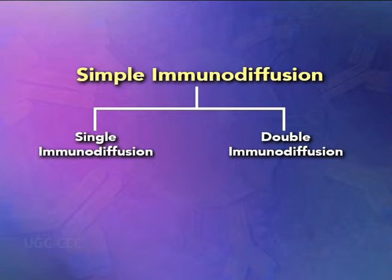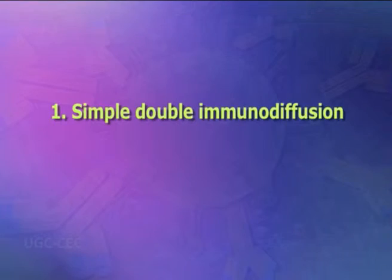The radial immunodiffusion method is used to determine alpha-fetoprotein occurring in certain liver tumors. In double immunodiffusion, both the antigens and the antibodies diffuse in gel. Under this heading, simple double immunodiffusion, the Ouchterlony procedure and immunoelectrophoresis are studied. Simple double immunodiffusion is double immunodiffusion in one dimension.